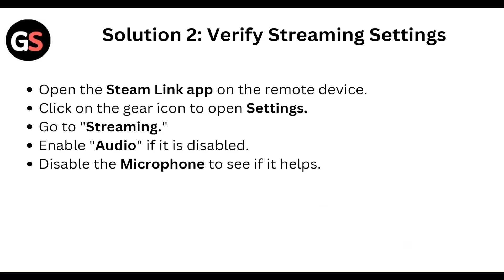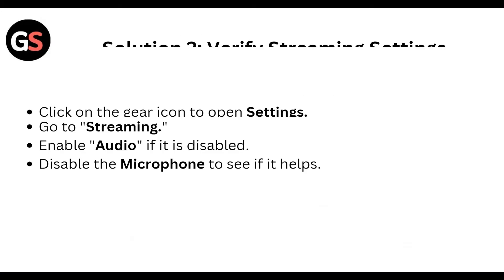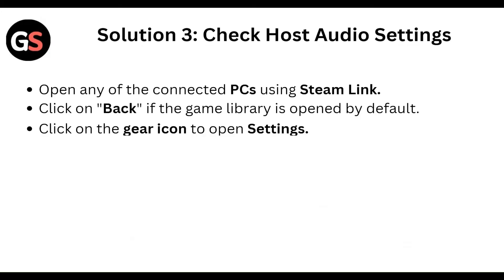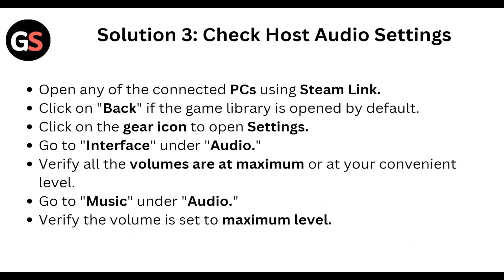Next, verify streaming settings. Open the Steam Link app on the remote device, click on the gear icon to open Settings, then go to Streaming Settings. Enable the audio if it is disabled, and try disabling the microphone to see if that helps.